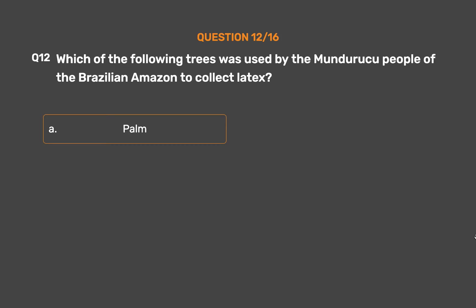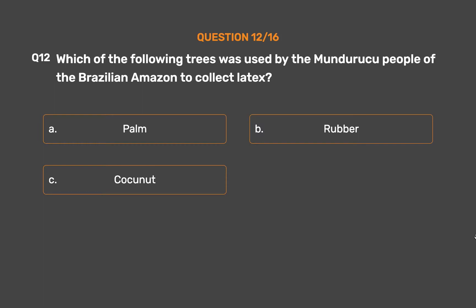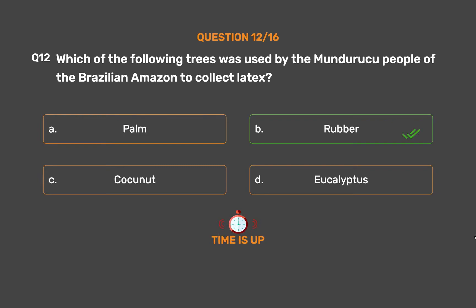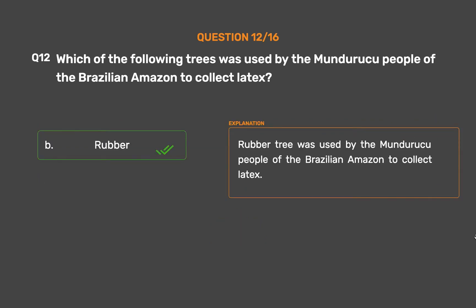Option A: Palm. Option B: Rubber. Option C: Coconut. Option D: Eucalyptus. The correct answer is Option B, Rubber. The rubber tree was used by the Munduruchu people of the Brazilian Amazon to collect latex.